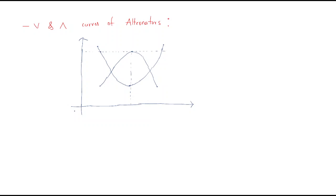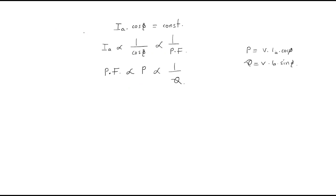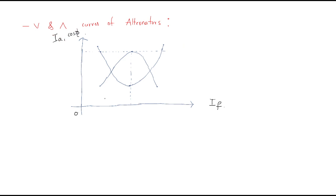On the graph, the x-axis represents field current and the y-axis has two quantities: armature current and power factor. The relationship between armature current and power factor is inversely proportional to each other.